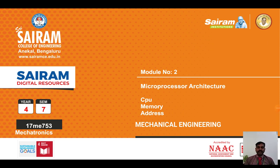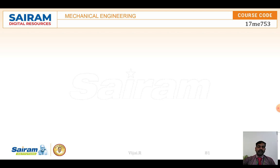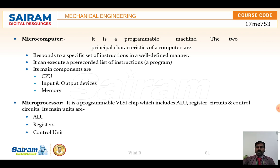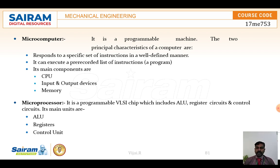In this video we are going to see about microprocessor architecture — the CPU, the memory, and the address. A microcomputer is a programmable machine made of different components. The computer performs different types of instructions based on the information we give it, responding to a set of instructions. Inside it consists of the CPU, input devices, and memory.